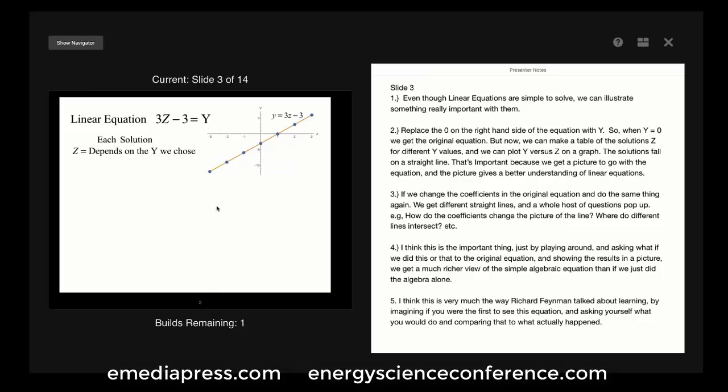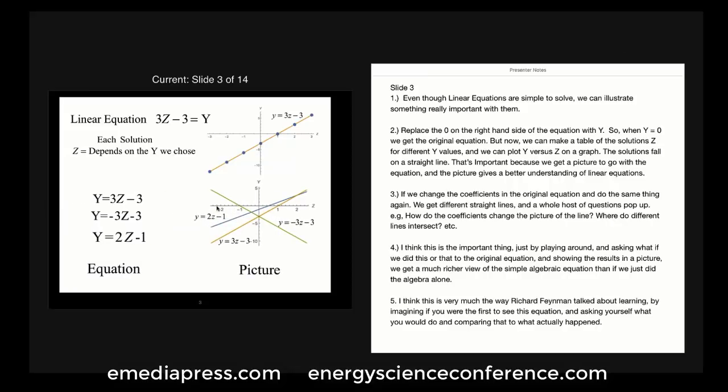That's important because we get a picture to go with the equation, and the picture gives a better understanding of linear equations. If we change the coefficients in the original equation and do the same thing again, we get different straight lines, and a whole host of questions pop up — how do the coefficients change the picture of the line, where do different lines intersect, and so forth. Just by playing around and asking what if we did this or that, and showing the results in a picture, we get a much richer view of the simple algebraic equation than if we just did the algebra alone.